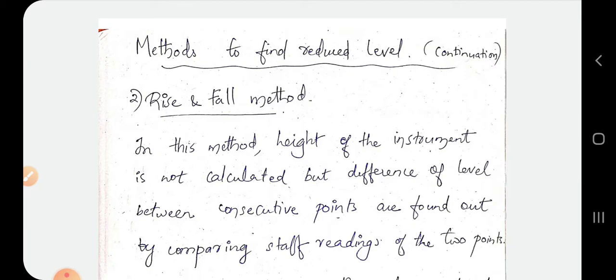We will have a few station points and reduced levels. That is our result. Finally, we will check arithmetic and verify.